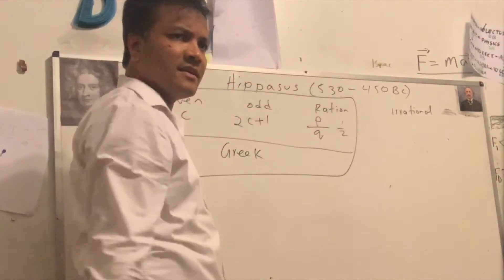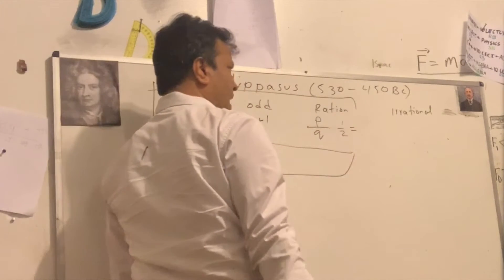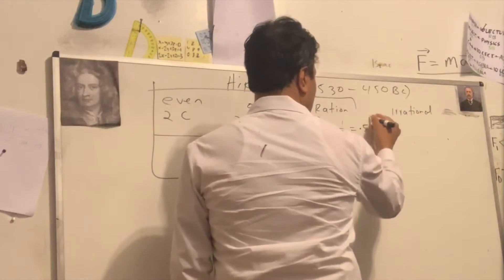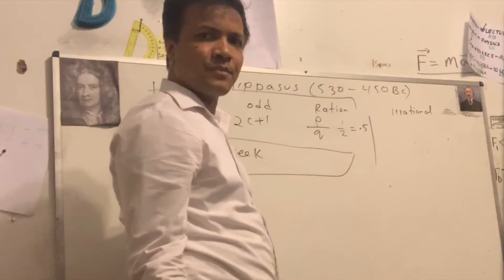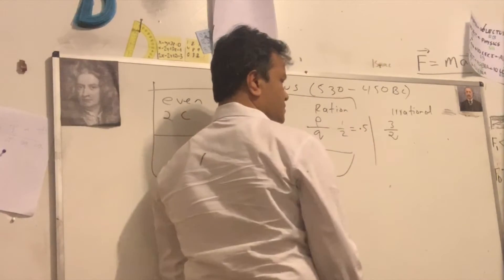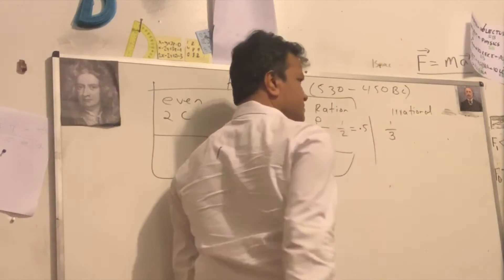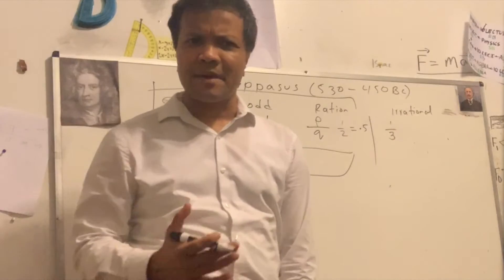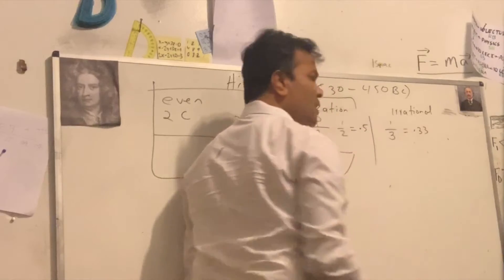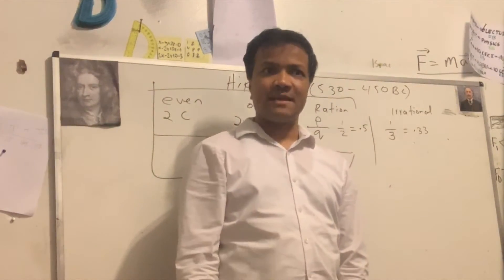Is one over two a rational number? Yes. Why? Because you can divide it — one divided by two is 0.5. That's a good rational number — it ends. But what about one over three? It's not irrational, but can you write it as 0.33? No, because you have to keep going. There is no ending. Does that make sense?